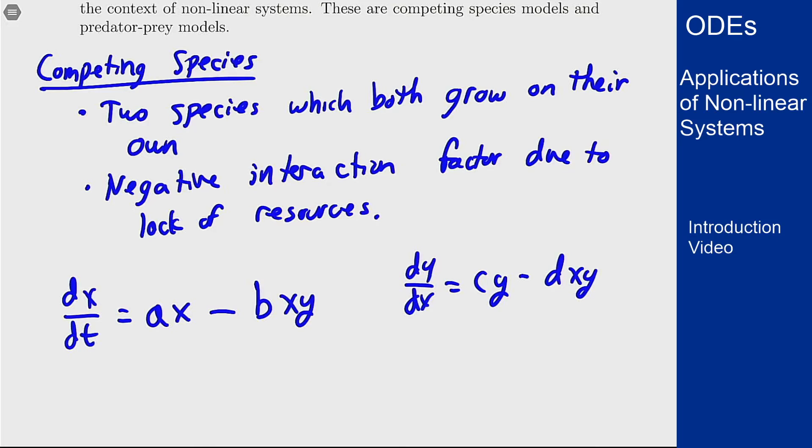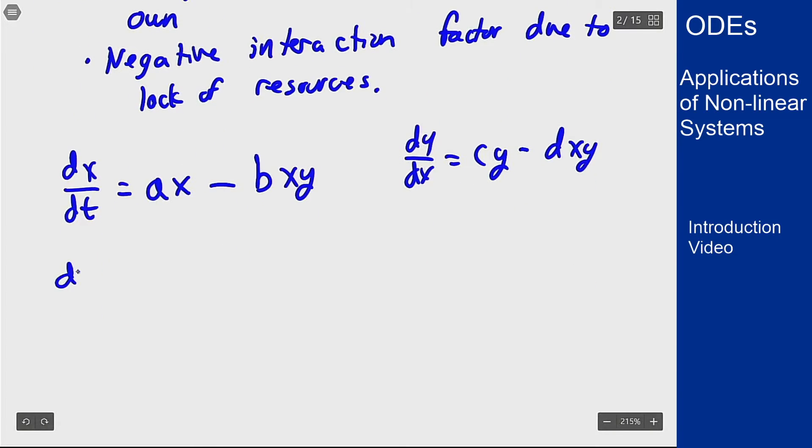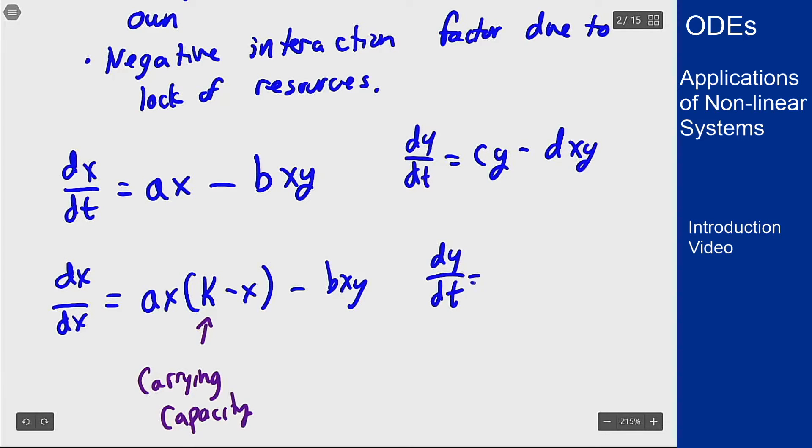You could add in a carrying capacity with the logistic growth here, and that would look something like dx/dt is ax times (k minus x) minus bxy, where this k here is the carrying capacity in terms of x. Similarly, dy/dt is cy times (m minus y) and then minus dxy as well.